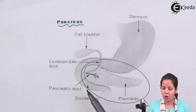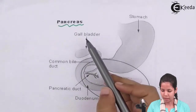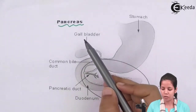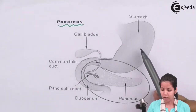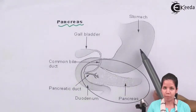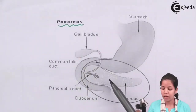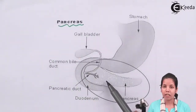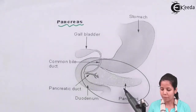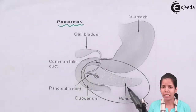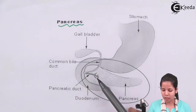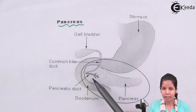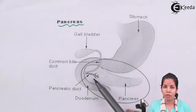This is the structure of pancreas and how the pancreas are associated with other organs. This is the region of the stomach, and below the stomach, or you can say in the duodenum region, rises the pancreas. You can see the pancreas are nothing but leaf-like structures that emerge in the duodenum region. The pancreas are associated with a pancreatic duct which secretes the pancreatic juices.